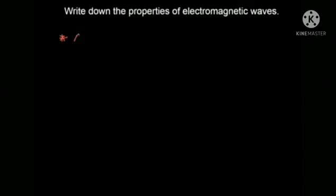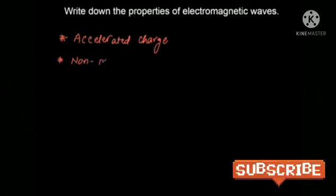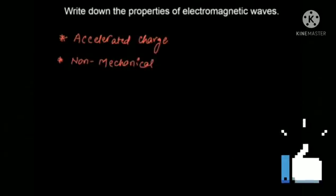The second property of electromagnetic waves is that they are non-mechanical waves. This means that electromagnetic waves do not require a medium for their propagation — they can travel in vacuum as well.